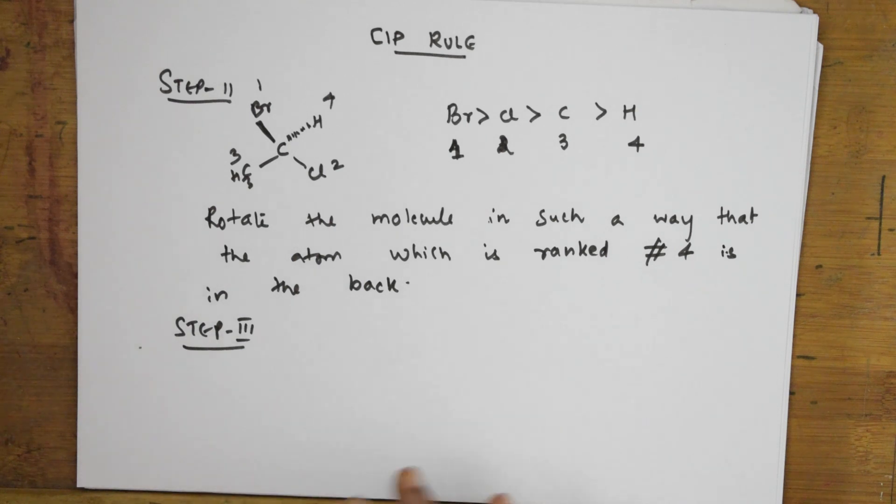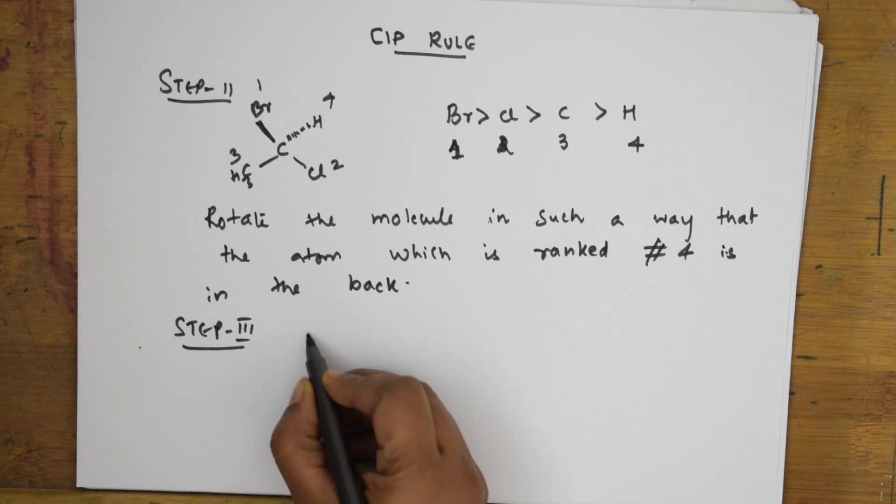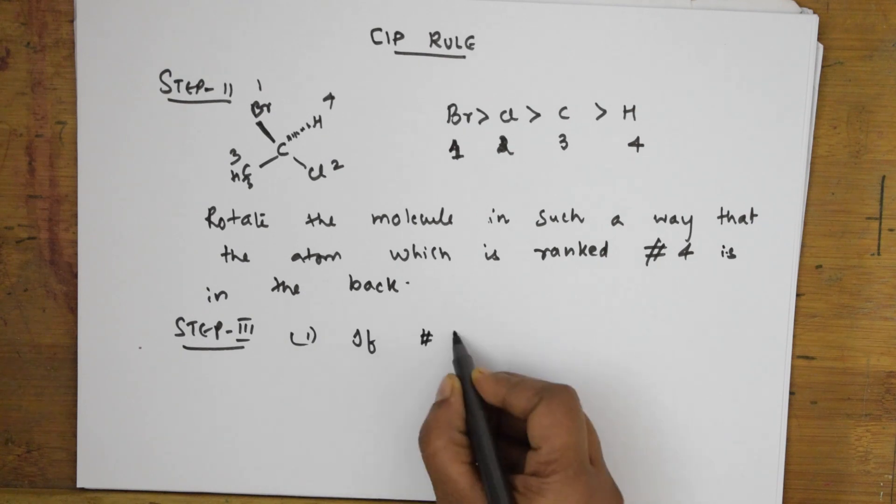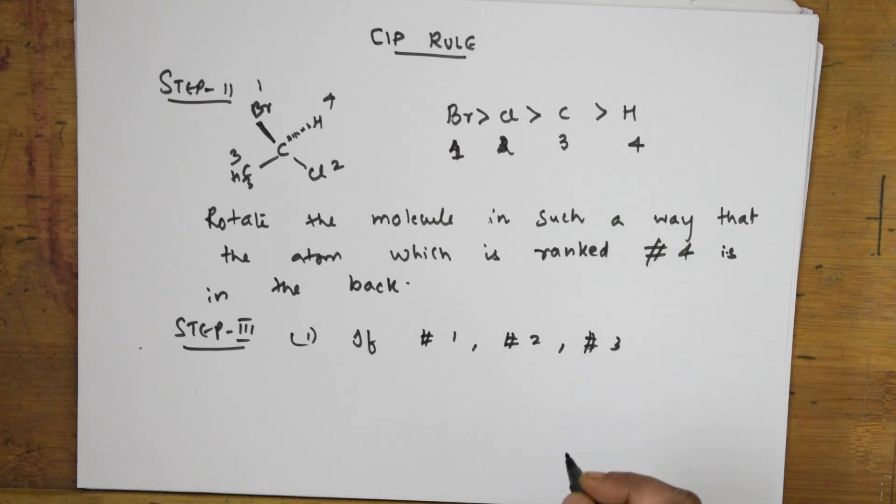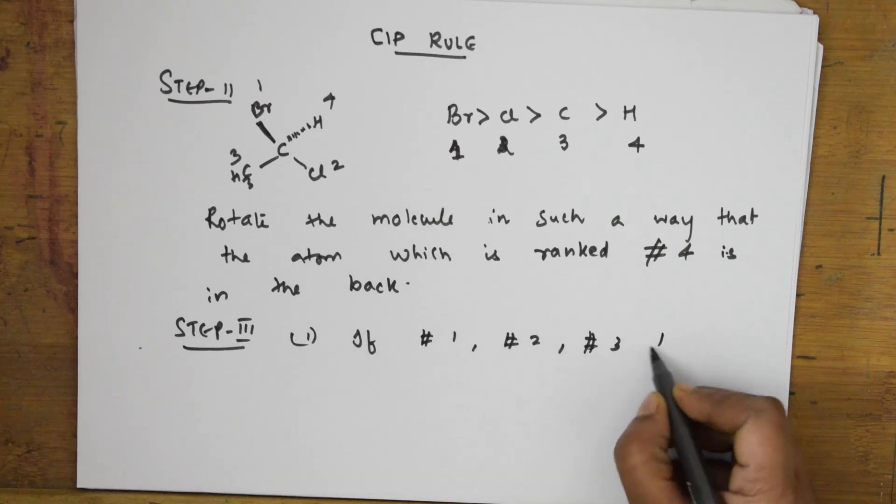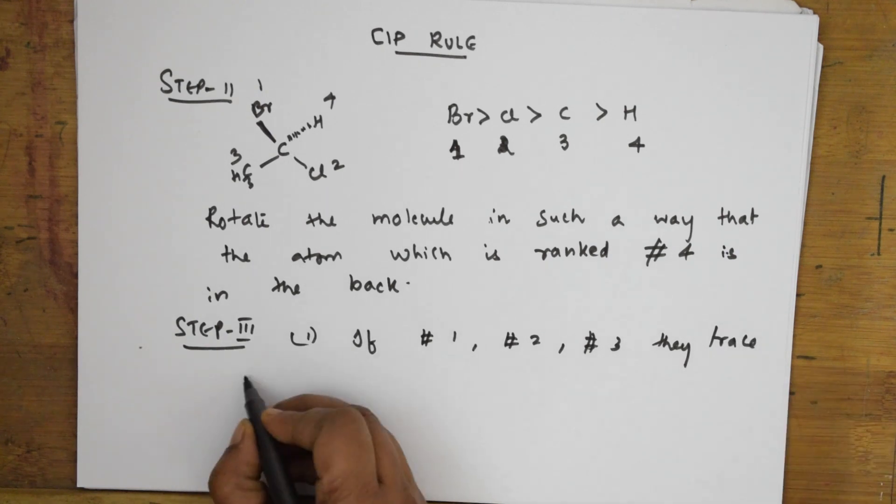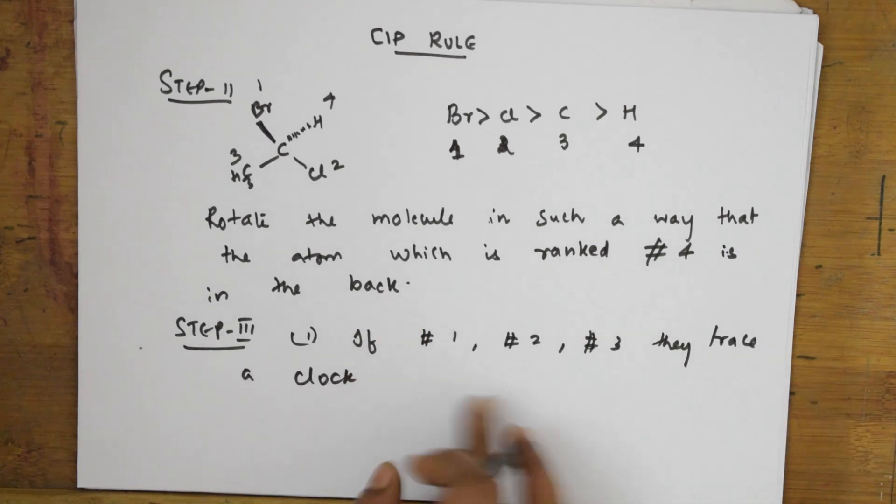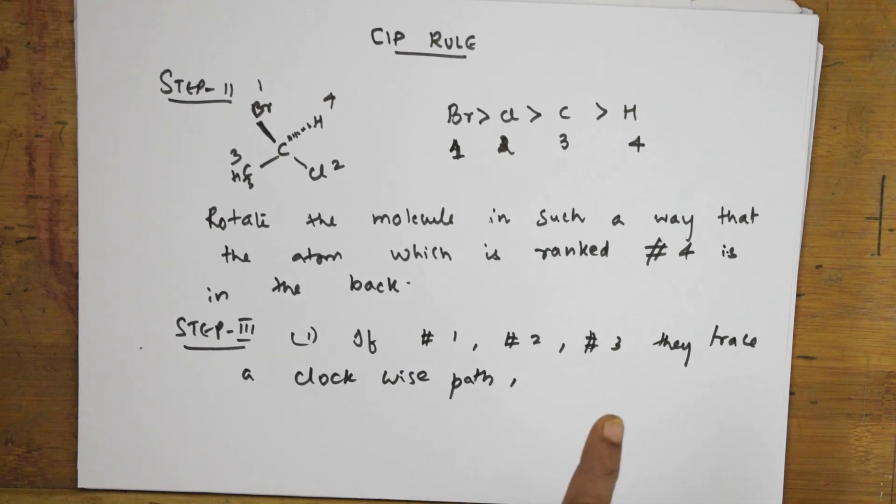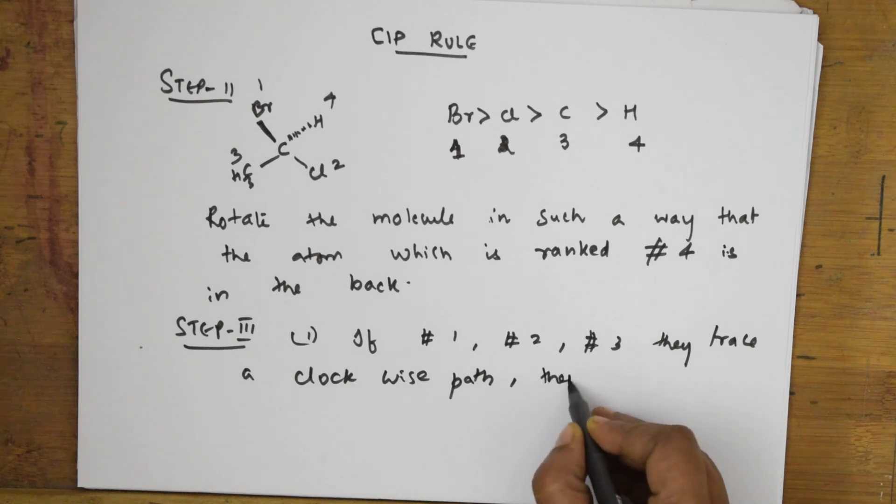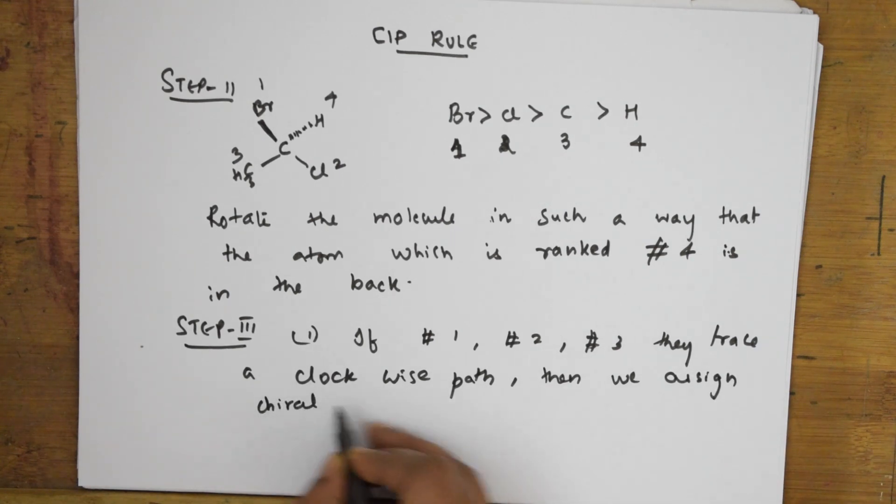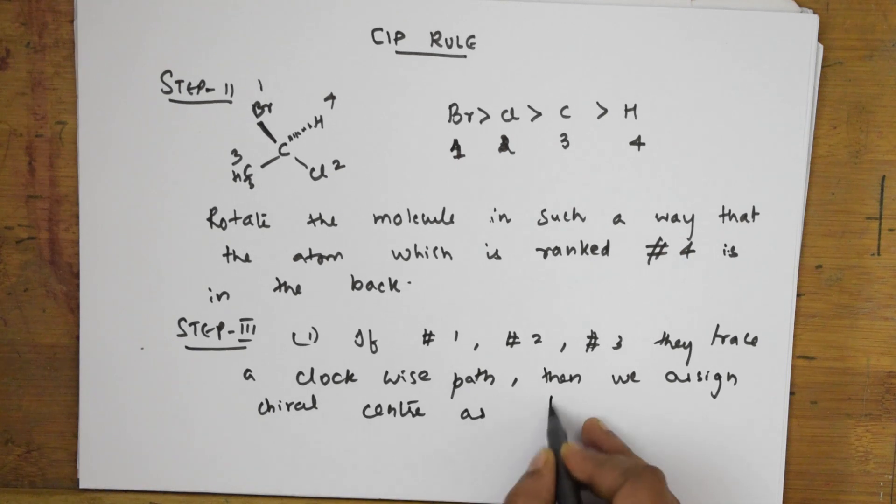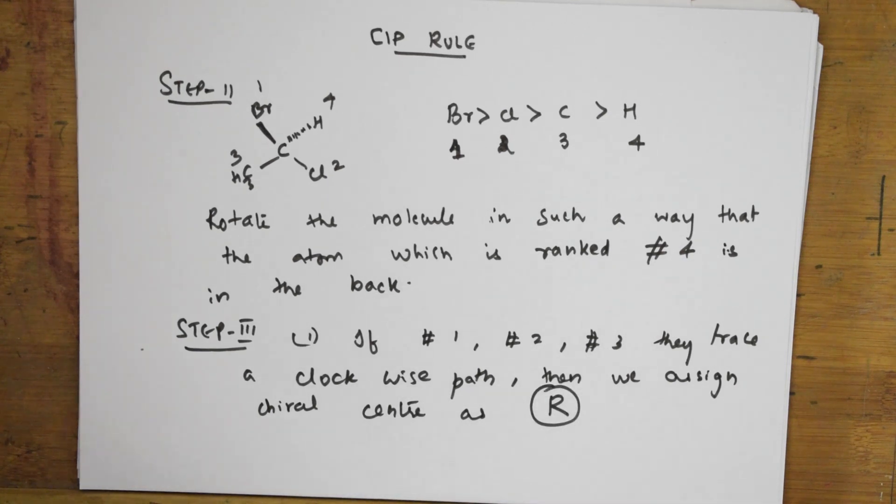If first option: one, two, three, if they trace a clockwise path in this direction, clockwise path, then we assign the chiral center as R. Then we assign the chiral center as R.